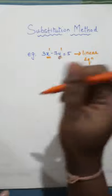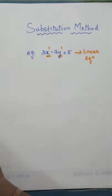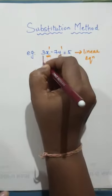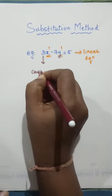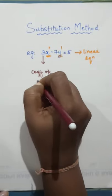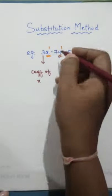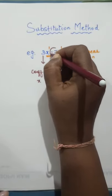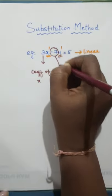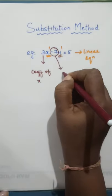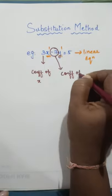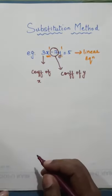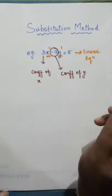Now, what is 3 and 7? Here, 3 is coefficient of x. 3 is called coefficient of x. And 7, now 7 is having negative sign, so we have to take that negative sign along with it. So minus 7 is called coefficient of y. These things you have already learned.